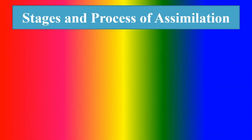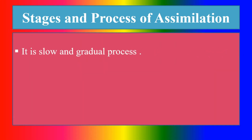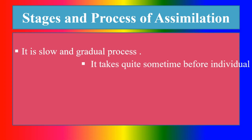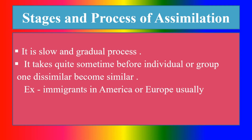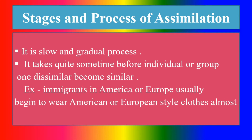Stages and process of assimilation: it is a slow and gradual process. It takes quite some time before individuals or groups become similar. Example: immigrants in America or Europe usually begin to wear American or European style clothing almost as soon as they land.